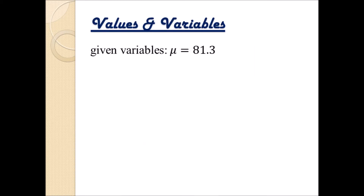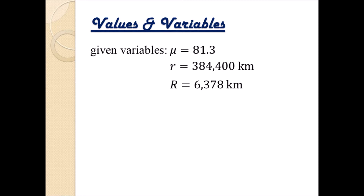So we have only three variables that are given. We know the mass ratio µ equals 81.3, which means that the mass of Earth is 81.3 times the mass of the Moon. We know that the average distance between the center of Earth and center of Moon is 384,400 km, and the radius of Earth, assuming it's spherical, R equals 6,378 kilometers. Under part (a) we search for distance x where the gravitational fields cancel out, and under part (b) we look for the velocity with respect to the second cosmic velocity needed to reach point x.